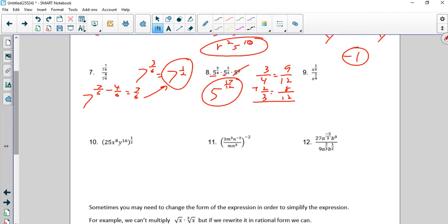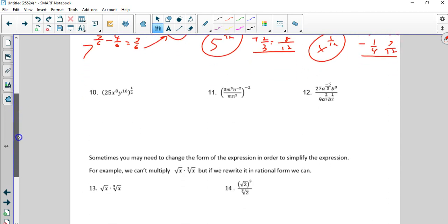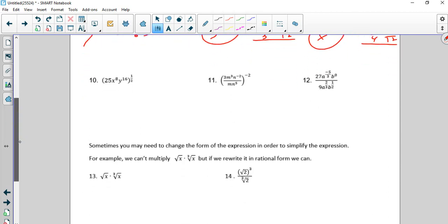Once again, here, we need to subtract 1 third minus 1 fourth. So we're going to keep the base and subtract the exponents. But we need to find a common denominator. So that's going to be 12. 4 times 3, 3 times 4, giving us 4 twelfths minus 3 twelfths is 1 twelfth. Number 10. Everything is going to be taken to the 1 half power, or square root. So 25 to the 1 half power, which is square root, so that's 5. X, 8 times 1 half is 4. And 16 times 1 half is 8.